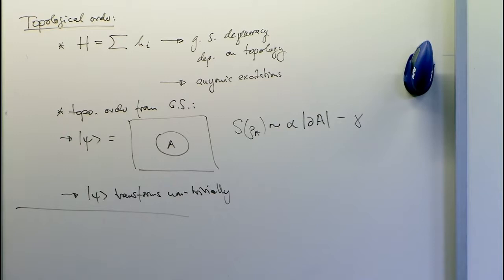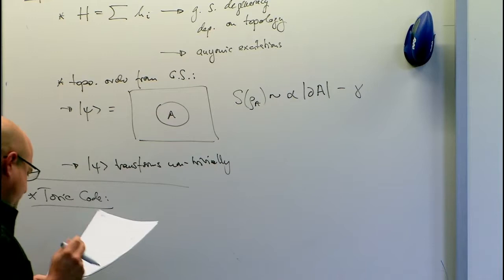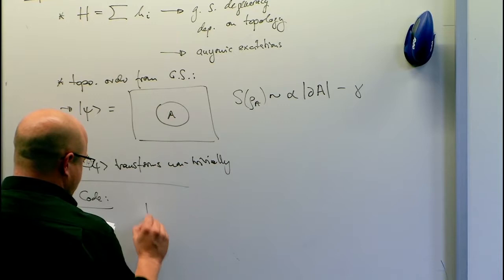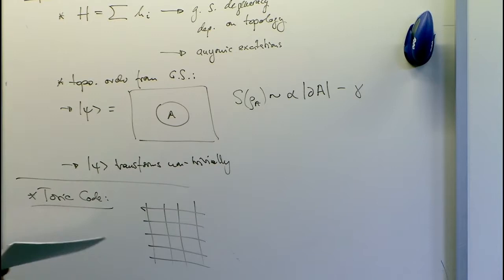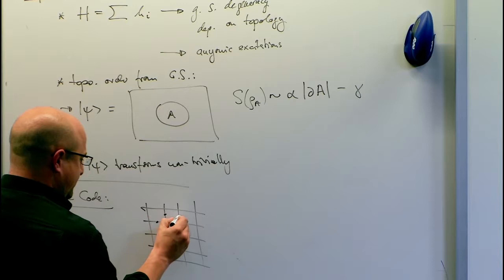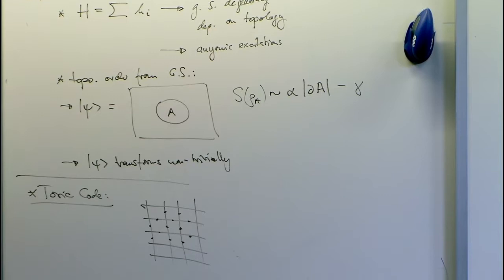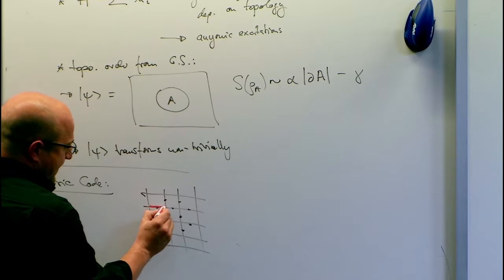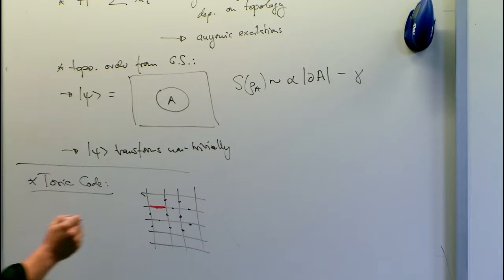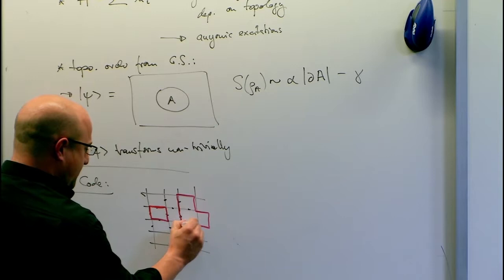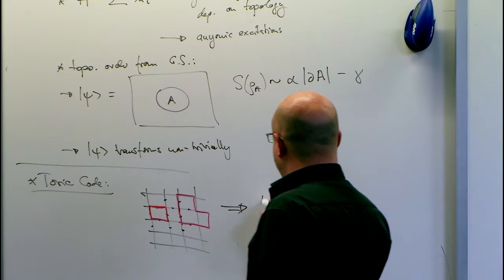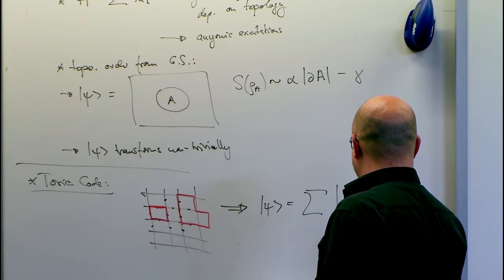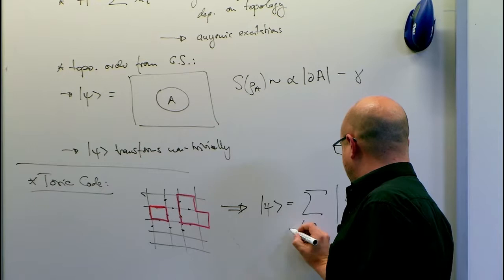Let's start from a simple example: the toric code state, the simplest topological model. We look at a model on a square lattice with spins sitting on the edges. I'll mark an edge red if the spin is in state one — it's a qubit, so zero or one. I want to consider states where the ones form closed loops, and consider a state which is a uniform superposition over all possible loop patterns.